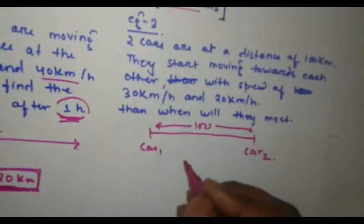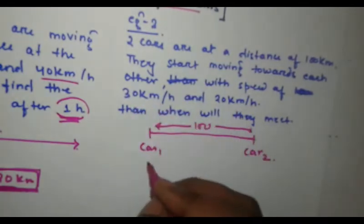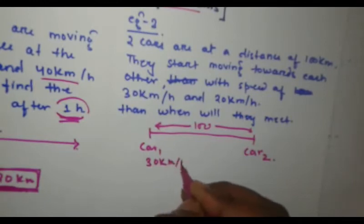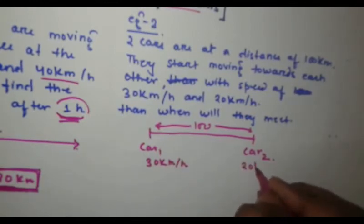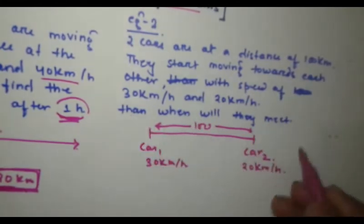Next what they have given, the speed of the cars are 20 km and 30 km. Let's say, car 1 possesses 30 km per hour and car 2 possesses 20 km per hour. Now, when will they meet?